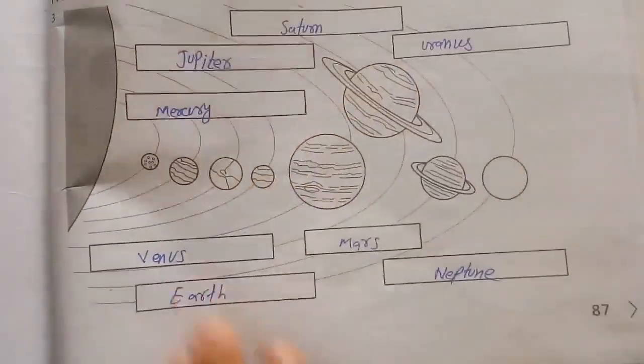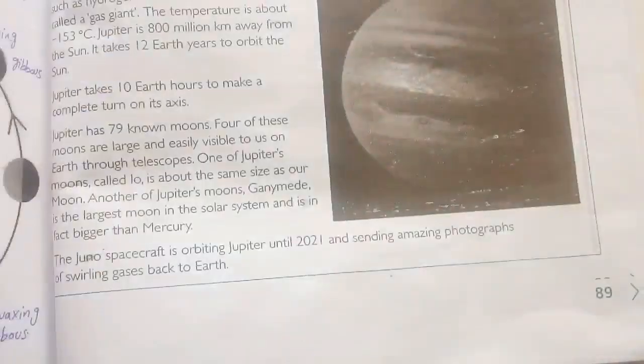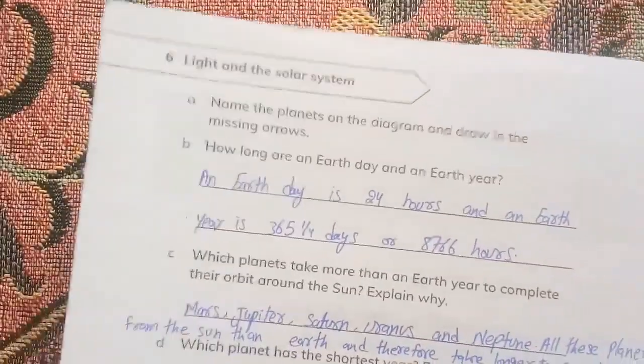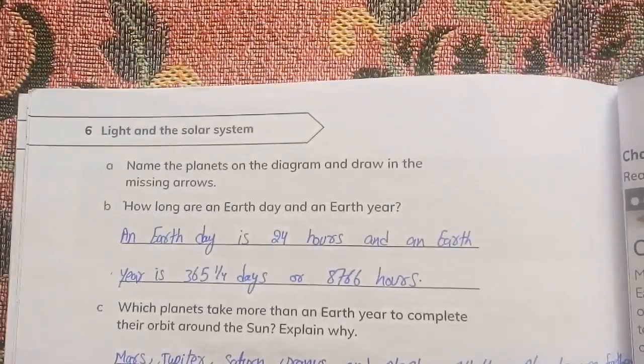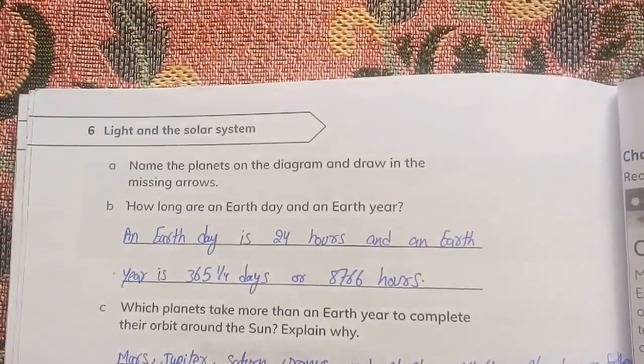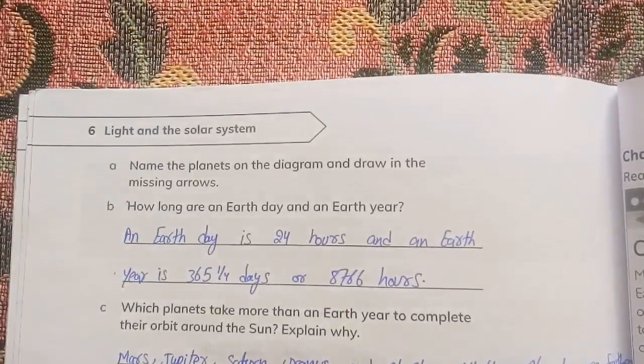Now come towards the next page where we have named the planets. Part number B: How long are an Earth day and an Earth year? An Earth day is 24 hours and an Earth year is 365 days or 8,766 hours.